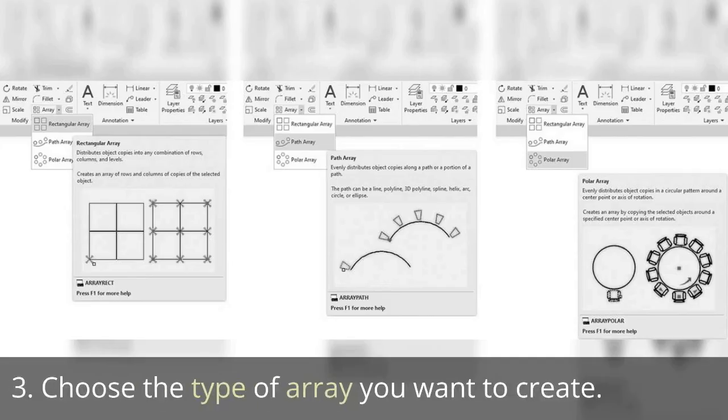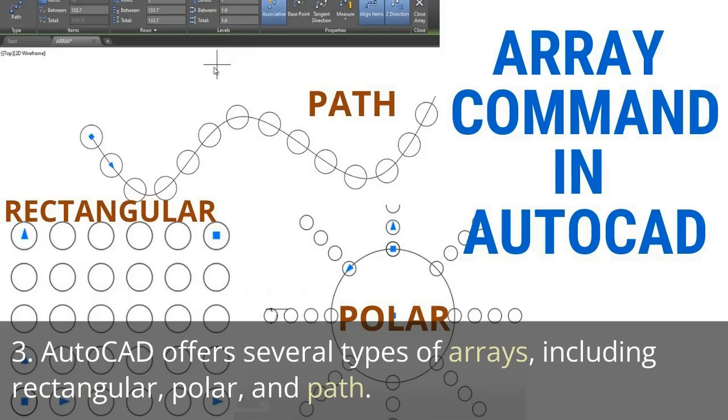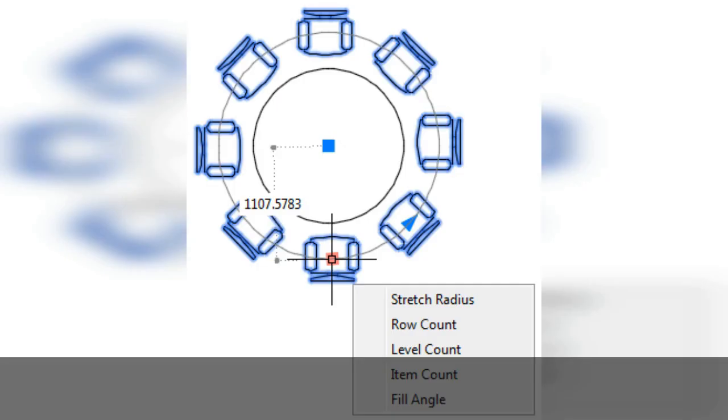Third, choose the type of array you want to create. AutoCAD offers several types of arrays, including Rectangular, Polar, and Path.